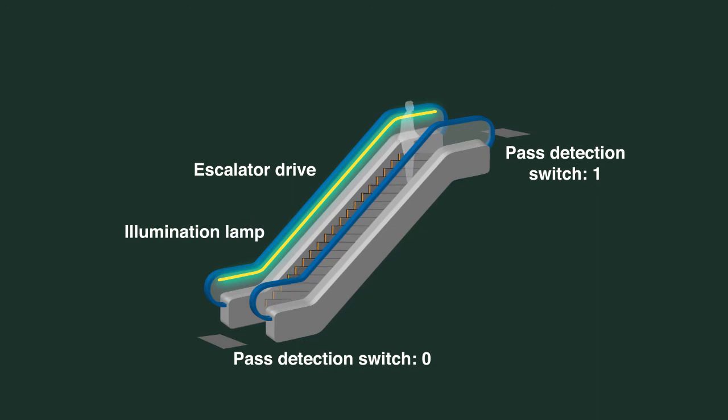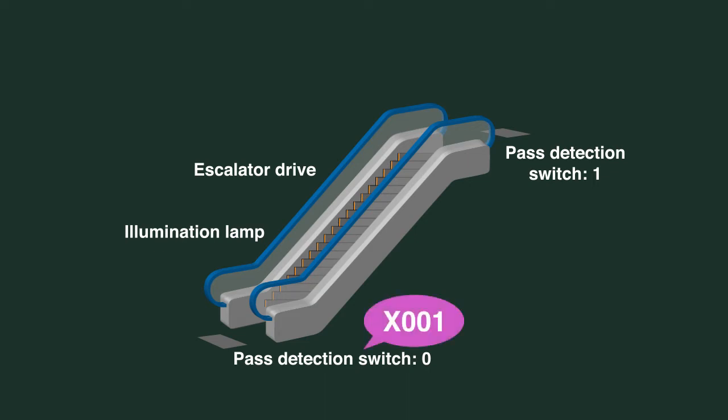If the sensor at the exit is turned on, the lamp will turn off and the escalator will stop. On the input side, we have x1, which is the entrance sensor, and x3, which is the exit sensor.